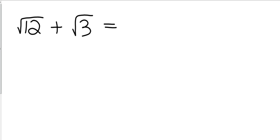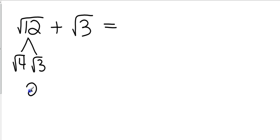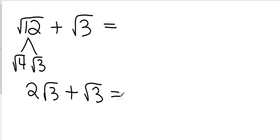Can I add those as they are? No. What do I need to do to check to see if maybe they might have something in common? Look at them just like we broke them down before. Can I break down the square root of 12 into something? Yes. What can I break it down into? Three and four. Now, do they have a common radical? Yes.